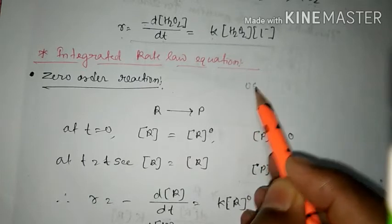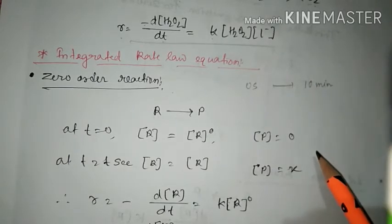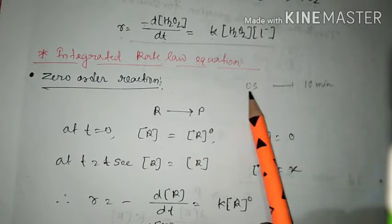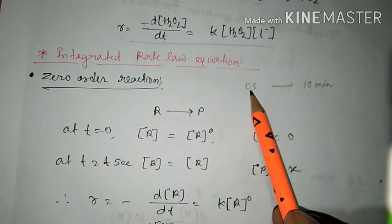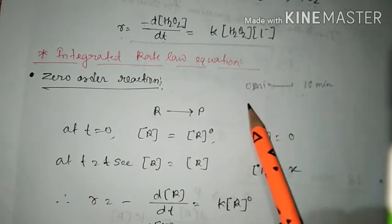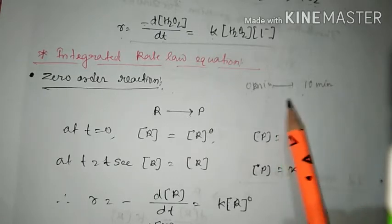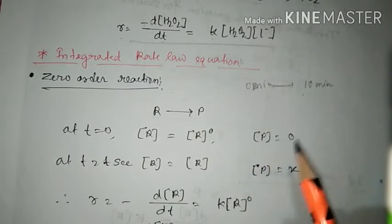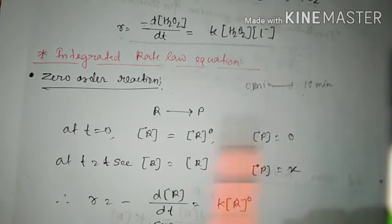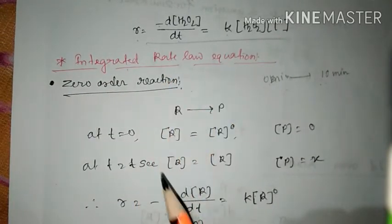Suppose from 0 seconds, where the reaction didn't start — that's the initial point — to 10 minutes, where the reaction completes. In this region from 0 to 10 minutes, so many instants of time are there: 5 seconds, 10 seconds, 20 seconds, and so on. That's why we can calculate so many instantaneous rates, but since there are so many, it is difficult to calculate each one. That's why we use the integrated — meaning the whole — rate of the reaction, dealing with the integrated rate law for particular rate equations.